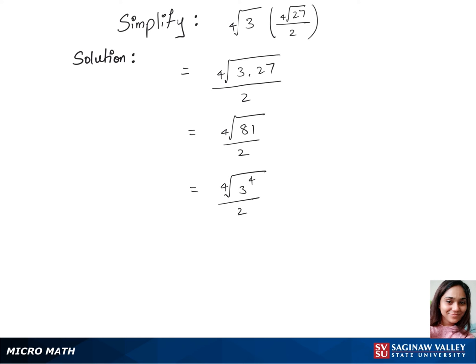We can now cancel the 4th root and the power 4, so we are left with 3 over 2. This is our final answer.